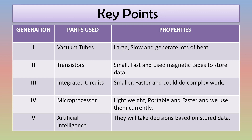In the fifth generation, computers will be able to make decisions based on previous learning. Whatever commands you have given before — if you want to execute a similar program again, the computer can carry out further work on its own based on previous learning, without needing too many additional instructions. This was all about the generations.